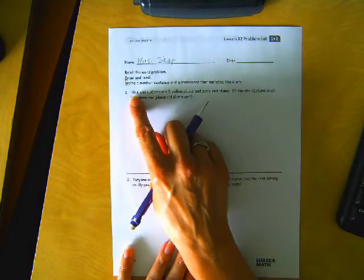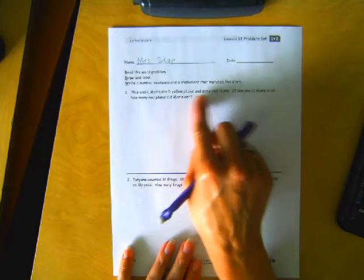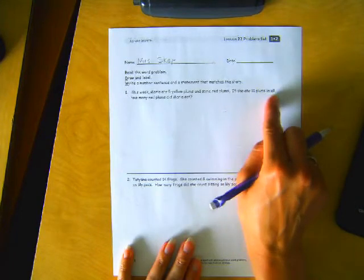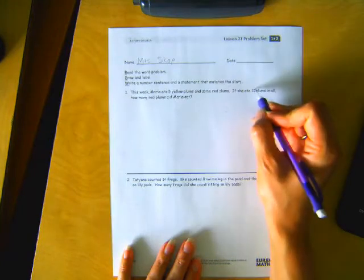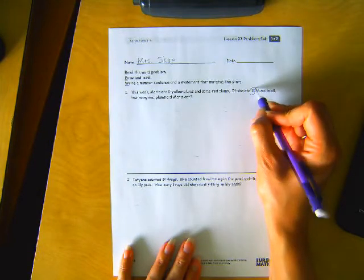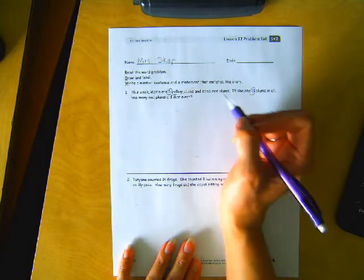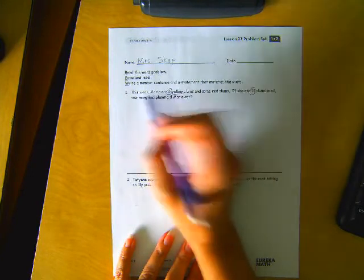Here we go. This week, Maria ate five yellow plums and some red plums. If she ate 11 plums in all, how many red plums did Maria eat? Okay, there's 11 in all. Five were yellow. So we read the word problem.